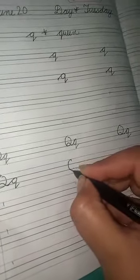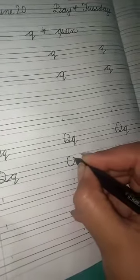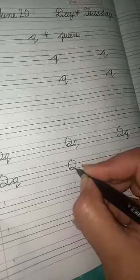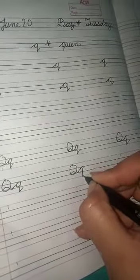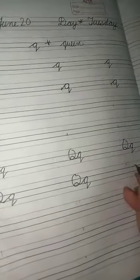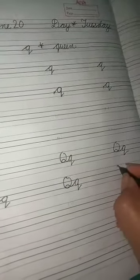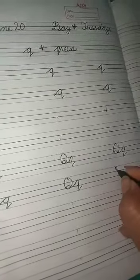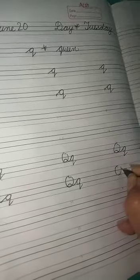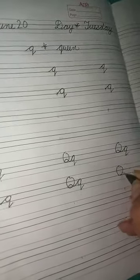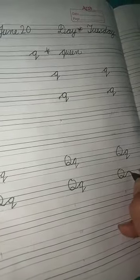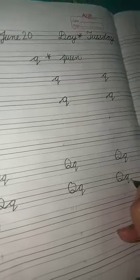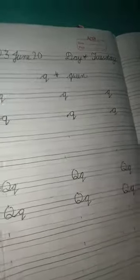See again. Firstly make capital Kyawu ka Queen, then make small Kyawu ka Queen like this way. Okay.